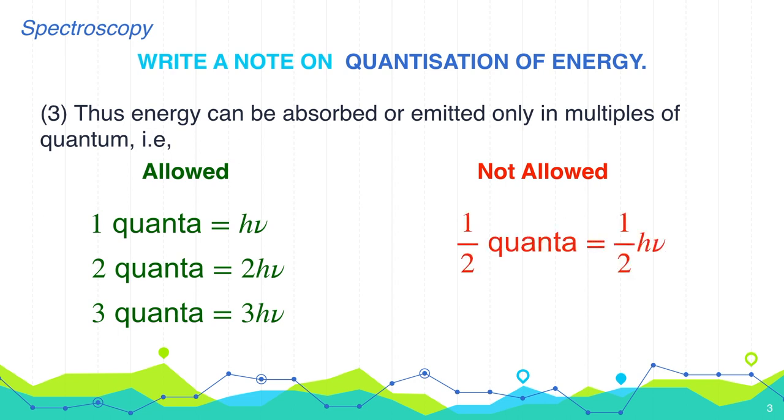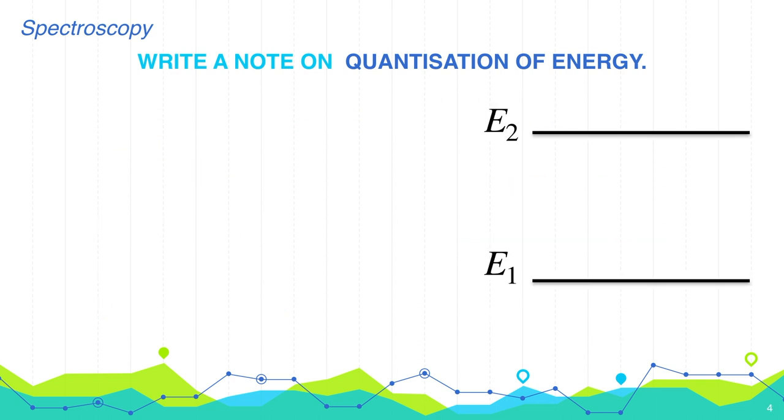While half of quanta or 3 by 2 of quanta, that is half of h nu or 3 by 2 of h nu, are not allowed. If E1 and E2 are two energy states,